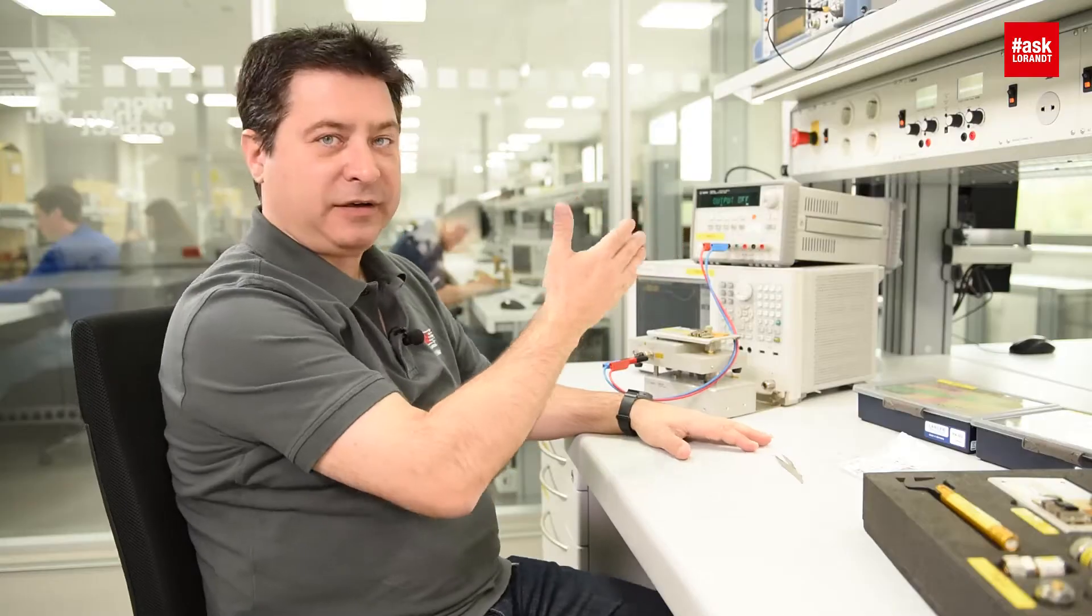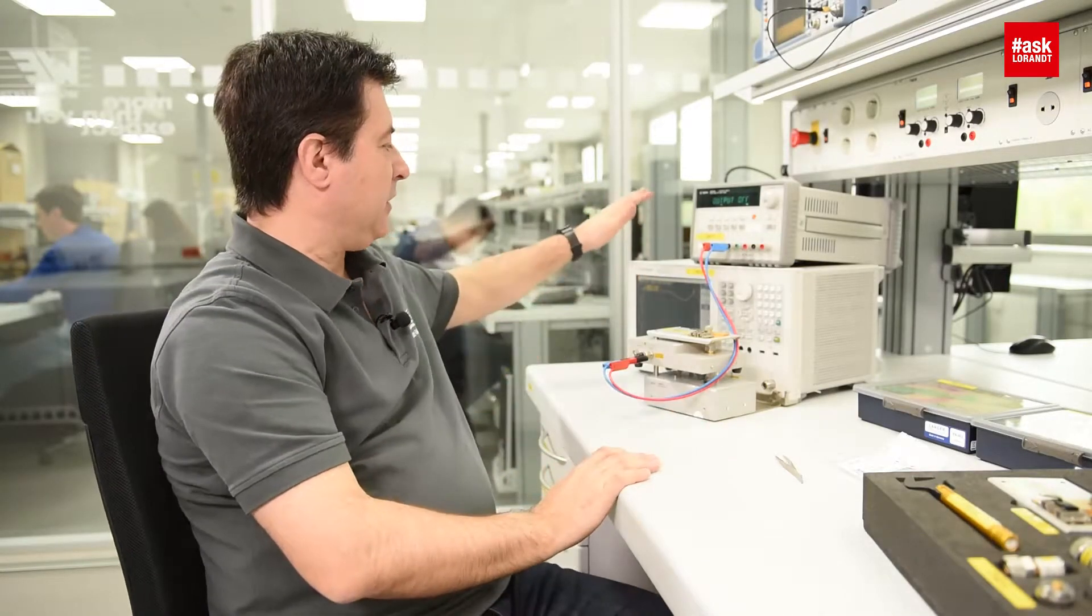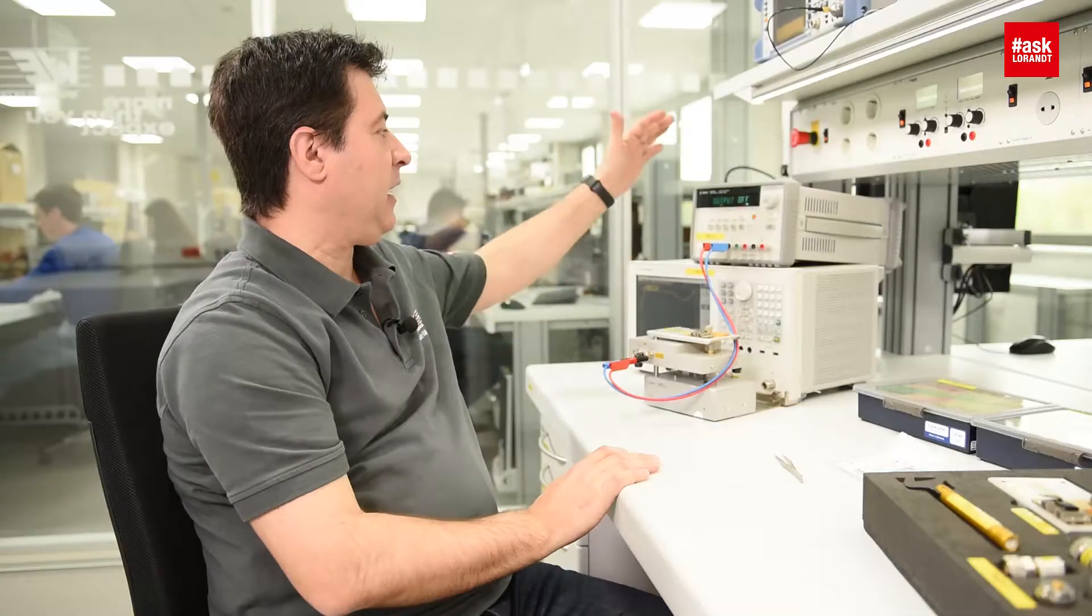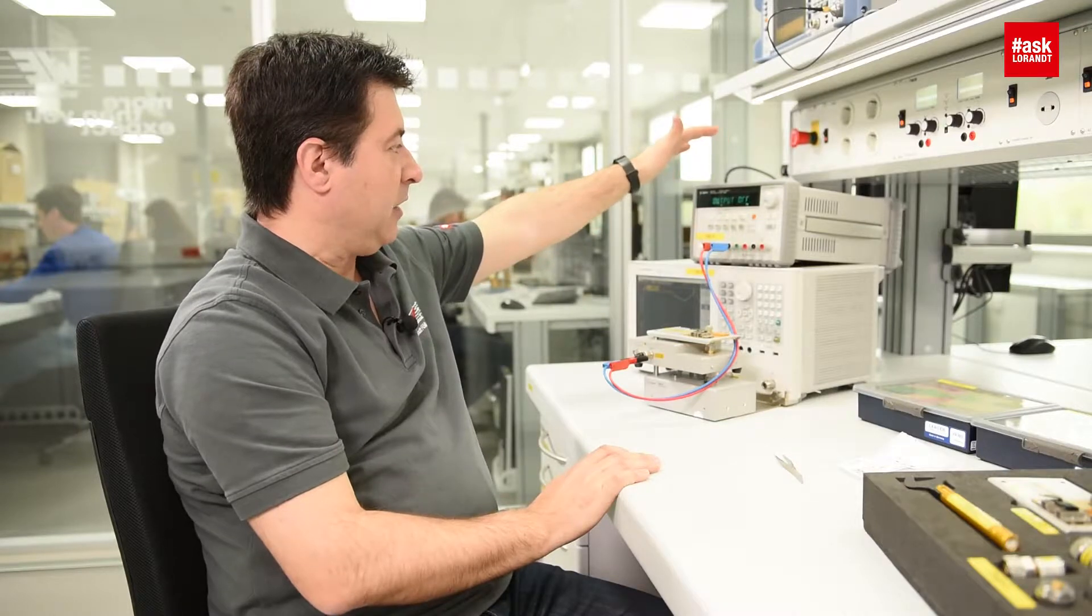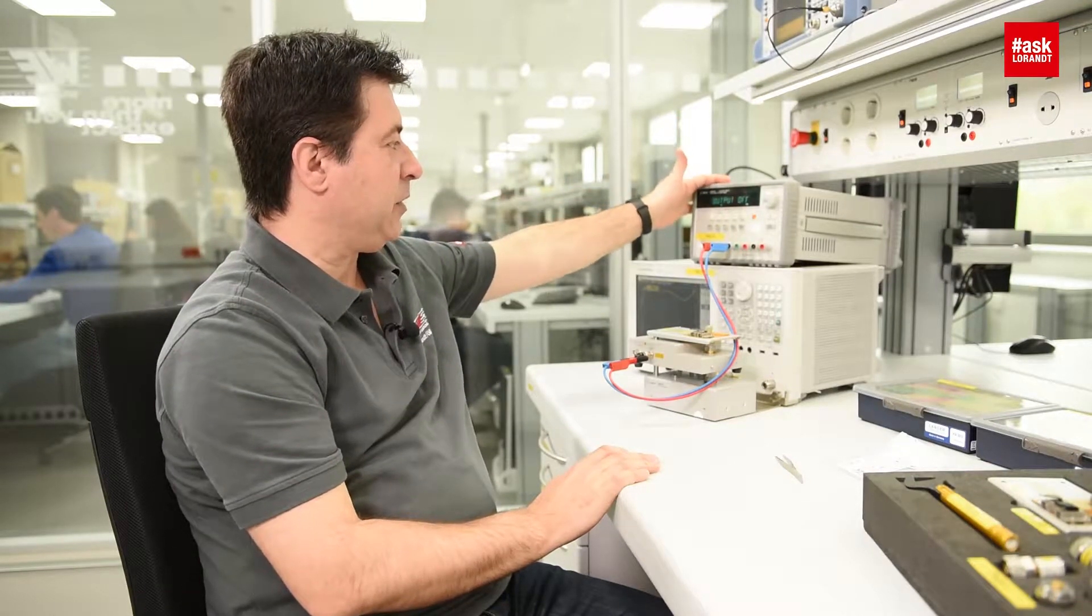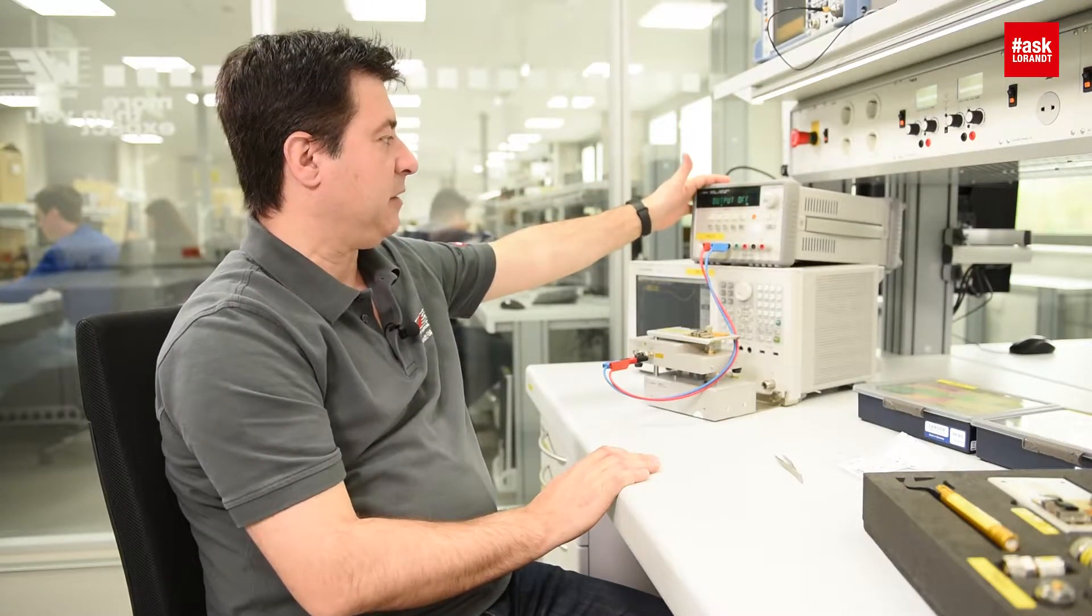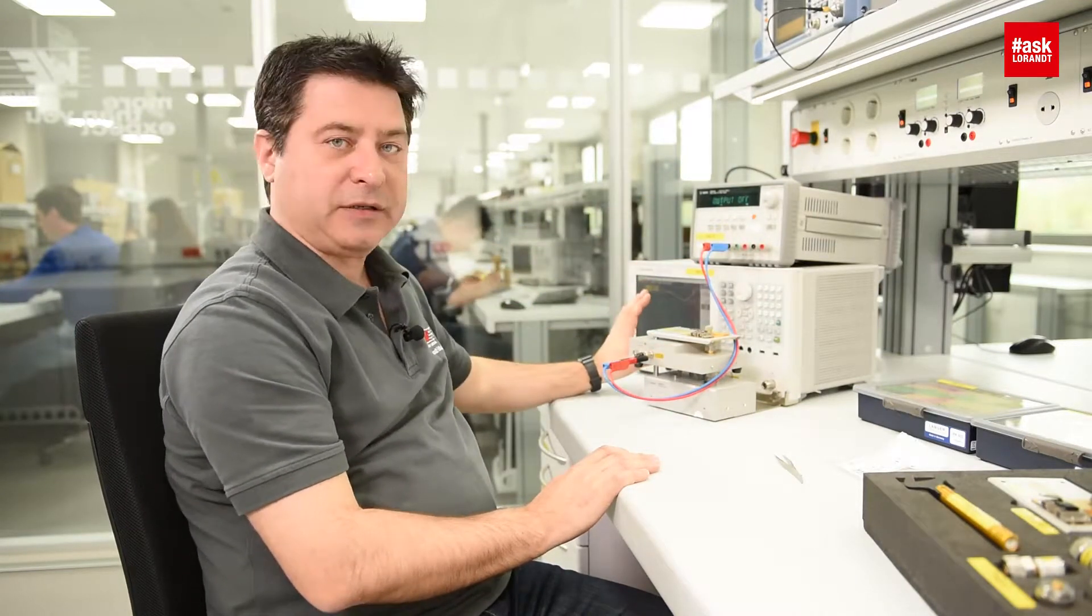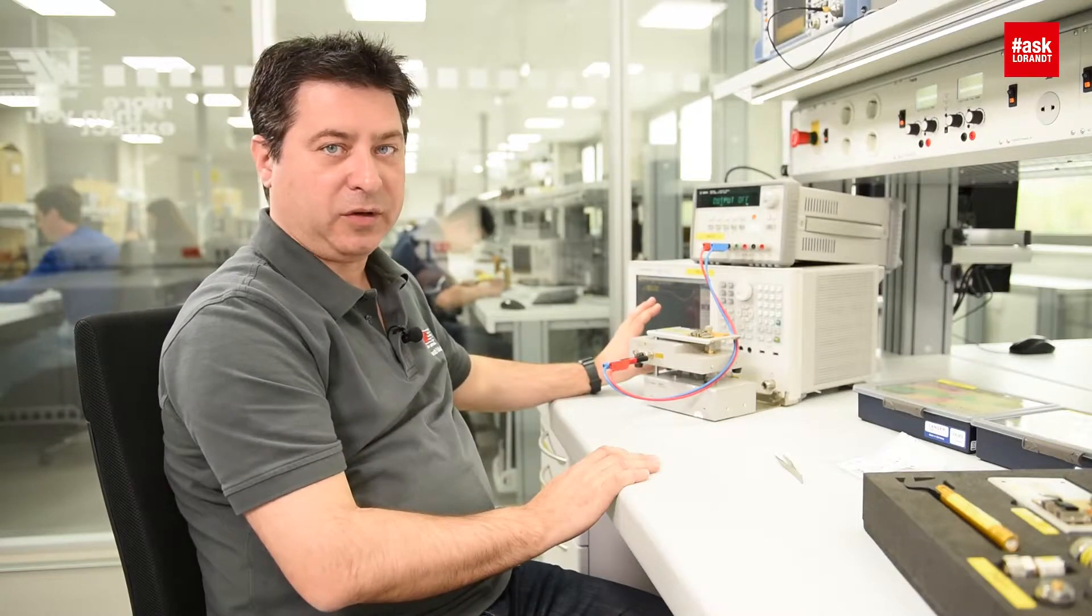For that purpose we have here an Agilent analyzer, it's a special network analyzer with a fixture, a special fixture for DC bias load, and we have from Agilent as well a power supply, a laboratory power supply with precise output. We will give some DC bias load and we will measure the impedance with and without the load.